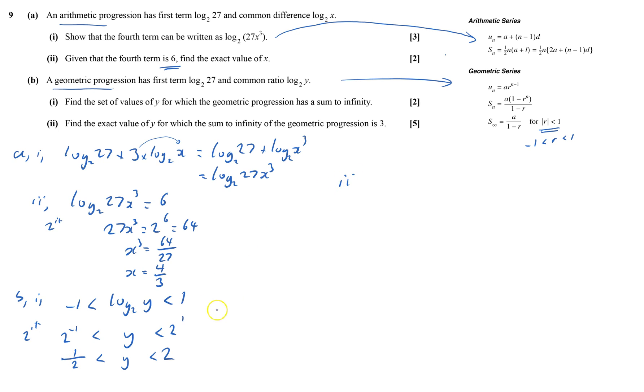So this is part B part two. Find the exact value for y which sum to infinity is 3. So we've got a over 1 minus r has to equal 3. It says that a is log 2, log to base 2 of 27, over 1 minus log to base 2 y.